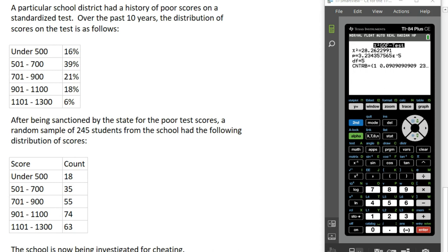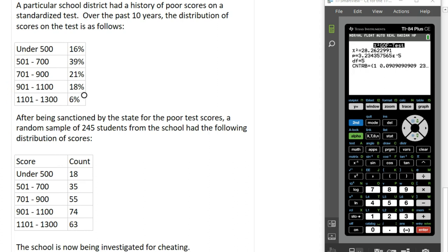We look at a random sample of 245 students from the school who took the test the following year, and these are the counts of scores that fall into each one of these categories. Because of these counts, the school is now being investigated for cheating. So what do we think about that?